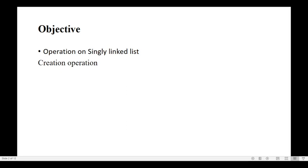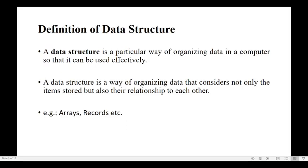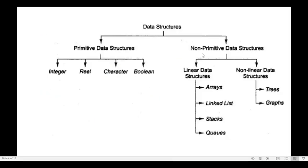As a basis, we know the definition of data structure: it is an organized way of storing data in a computer so that we can perform any operations on the data effectively. We have primitive data structures and non-primitive data structures. Primitive data structures include integer, real, character, and boolean. Non-primitive data structures include linear data structures and non-linear data structures. In linear data structures we have arrays, linked list, stacks, and queues; in non-linear we have trees and graphs.